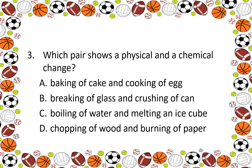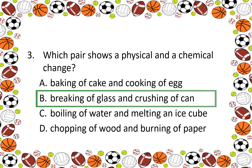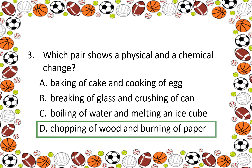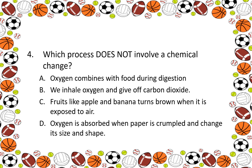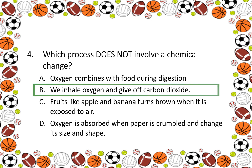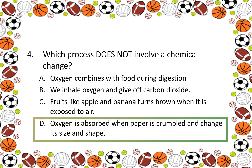Number 3: Which pair shows a physical and a chemical change? A. Baking of cake and cooking of egg. B. Breaking of glass and crushing of can. Number 4: Which process does not involve a chemical change? A. Oxygen combines with food during digestion. B. We inhale oxygen and give off carbon dioxide. C. Fruits like apple and banana turn brown when exposed to air. D. Oxygen is not involved when paper is crumpled and changed its size and shape.